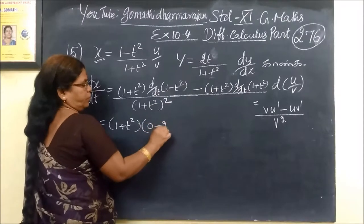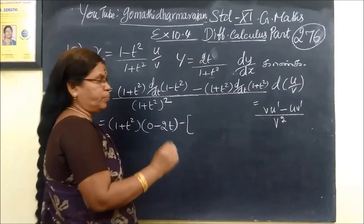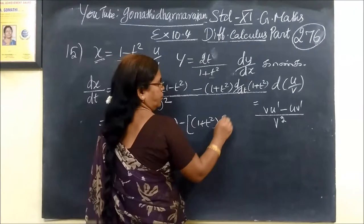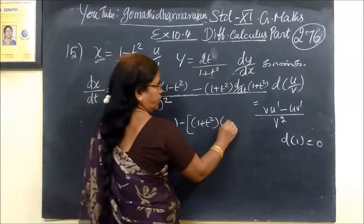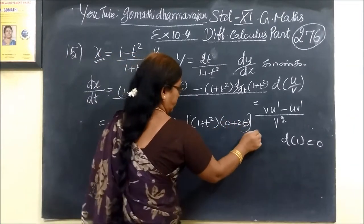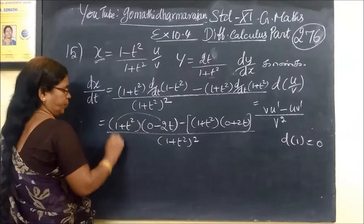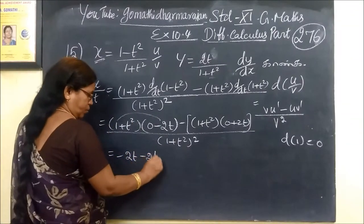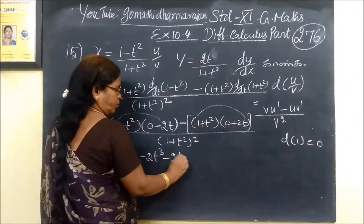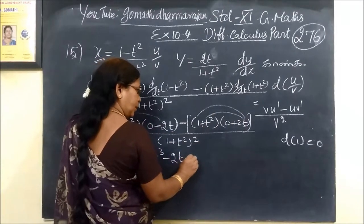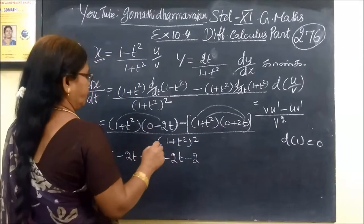Now this is 0. This is minus 2t. 2 in the side level, then minus — we put the bracket — then 1 plus t squared. Now the difference of 1 is 0. So 0 plus 2t, then y: 1 plus t squared is equal to t squared. Now the difference is minus 2t, minus 2t cubed. So minus 2t cubed.